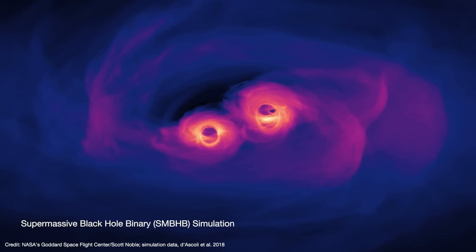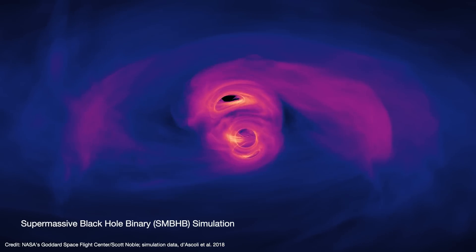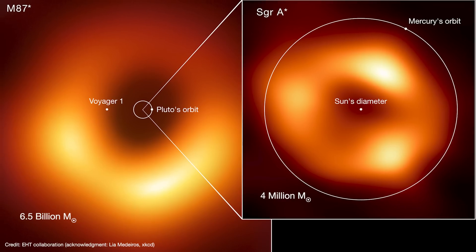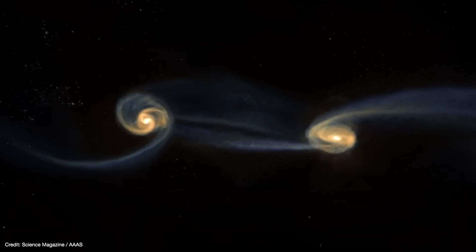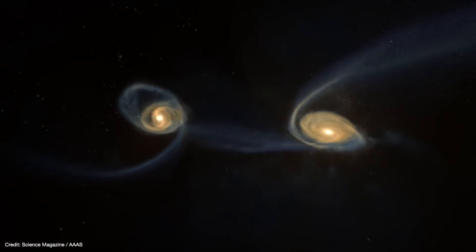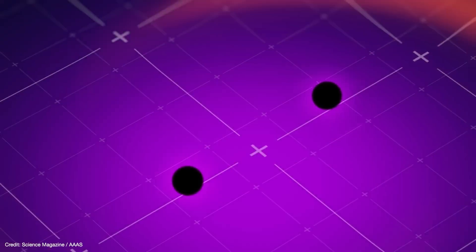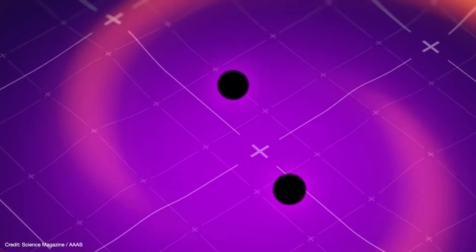But what about binaries consisting of supermassive black holes? Most galaxies have a supermassive black hole in their cores that can range from millions of solar masses to tens of billions of solar masses in the largest galaxies. And galaxies merge all the time, so their supermassive black holes should eventually find each other and form a binary system. But supermassive black holes eventually settle into a stable orbit separated by a few light-years. And that means they're going to take several years to complete a single orbit.